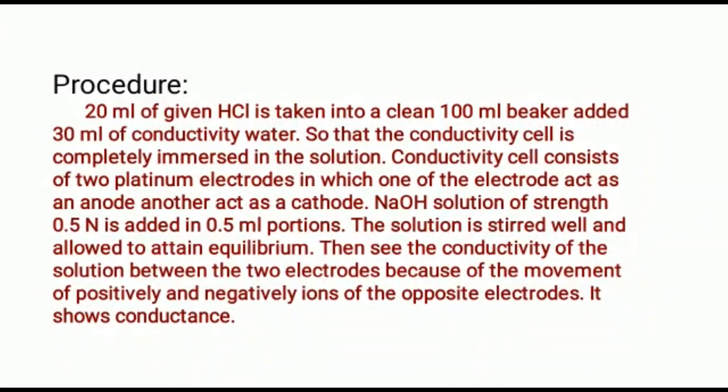The given hydrochloric acid is transferred into a 100 ml standard flask and the solution is made up to the mark using distilled water. Then 20 ml of the hydrochloric acid is taken in a clean 100 ml beaker and 30 ml of conductivity water is added, so that the conductivity cell is completely immersed in the solution.